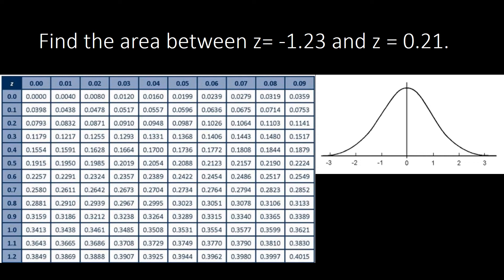Hello once again, this is your teacher Jenny. Join me once again for another discussion on finding the area under the normal curve or the normal distribution. Here we have: find the area between z equal to negative 1.23 and z equal to 0.21. This time we have two values for z — one from the negative side or the left side of your curve, and the other one is on the right side of the curve.